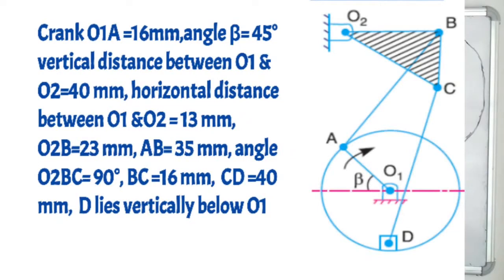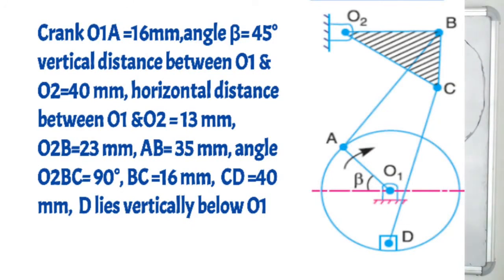This is the most important point: triangle O2BC is shown with meshing, so we have to give the number as link 1 for this whole triangle. As per the dimensions, O2B length and BC length are given, and the angle of O2BC is also given, so from that we can draw the triangle. CD is also given, where D is vertically below O1. There is a slider D which is reciprocating along a horizontal line. We have to find out the velocity of the needle at point D for the given configuration, and crank O1A rotates at 400 RPM.